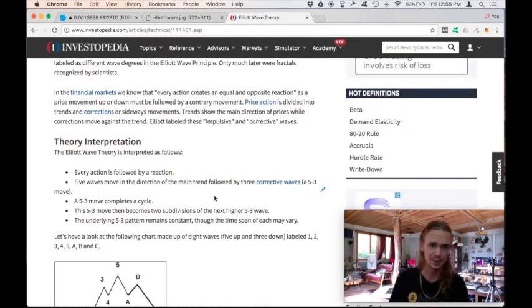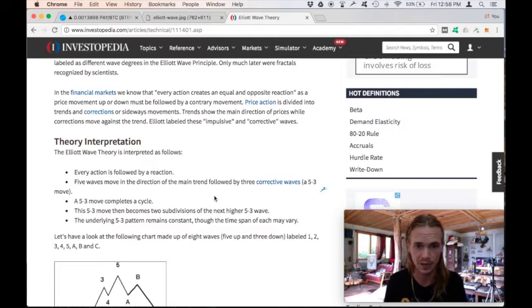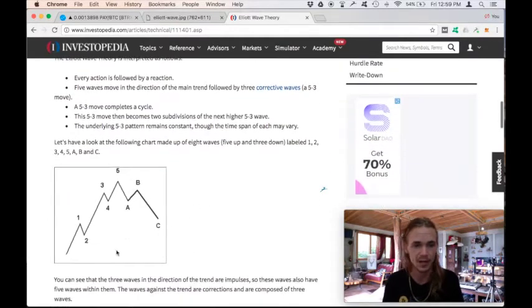So in these financial markets, Elliott then realized that for every action, there's a greater or opposite reaction. So the price movement up or down must then be followed by a contrary movement. Since price action is divided into these trends and correlations of sideways movements, trends then show the main direction of prices while corrections move against these. Elliott labeled waves impulsive and corrective.